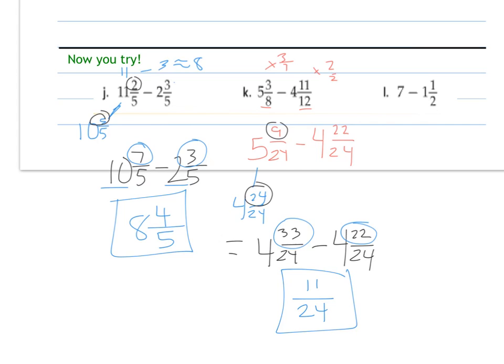Last one here. 7 is not a fraction, so we need to change it. We're going to change it to be a mixed number. So it's the same as 6 and 1. So we can write 1 as a fraction with a denominator of 2 as 2 over 2. So 6 and 2 over 2 is the same as 7. So I'm going to subtract now. 2 minus 1 is 1. 6 minus 1 is 5. 5 and a half.